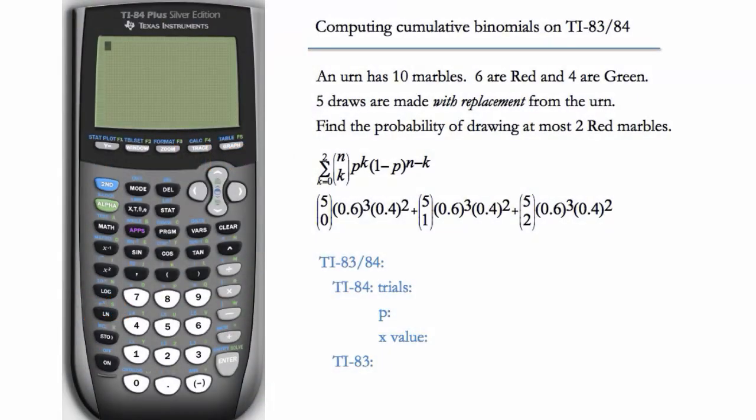We'll start with a problem from the previous video. An urn has 10 marbles, 6 are red and 4 are green. Five draws are made with replacement from the urn. This time, instead of finding the probability of drawing exactly two red marbles, we want the probability of drawing at most two red marbles.